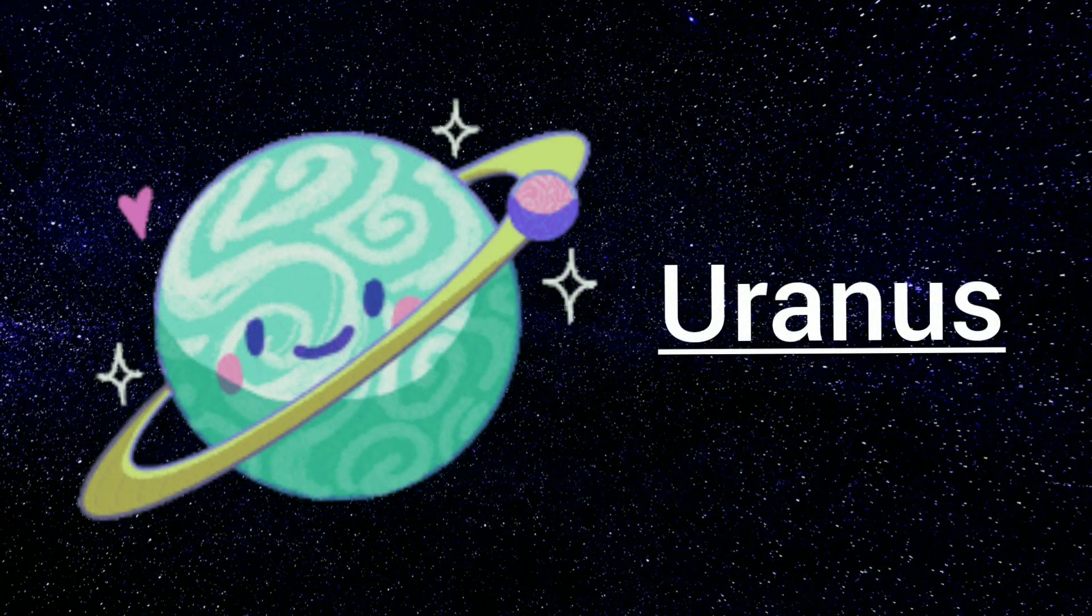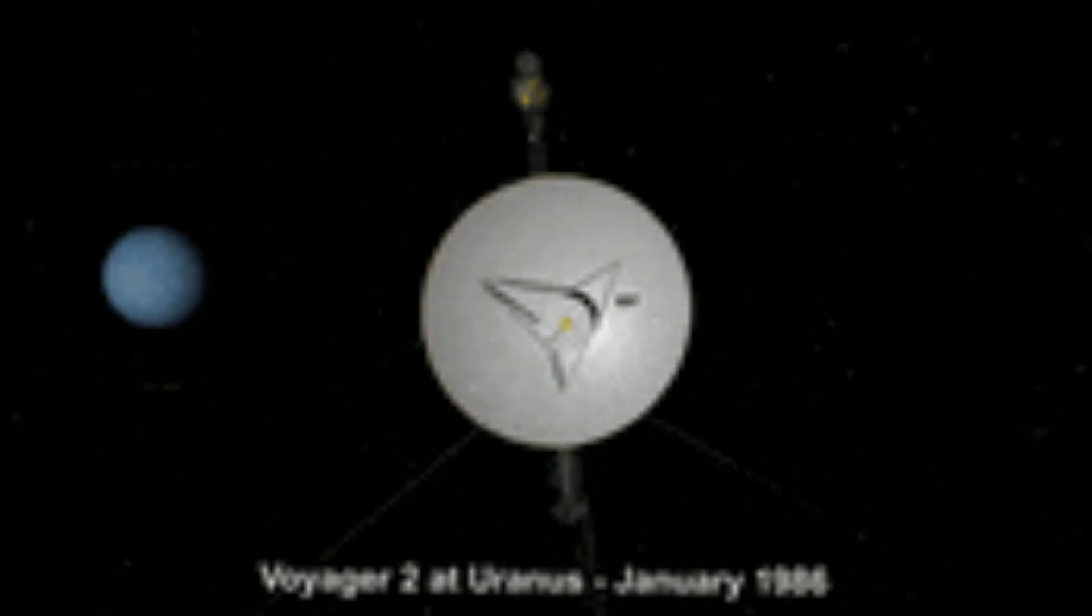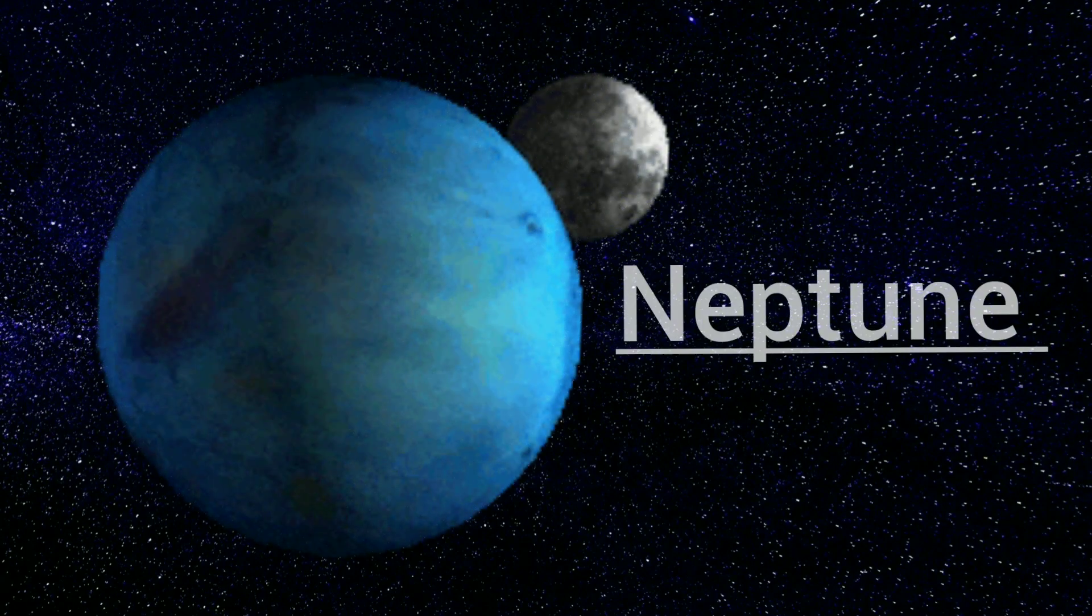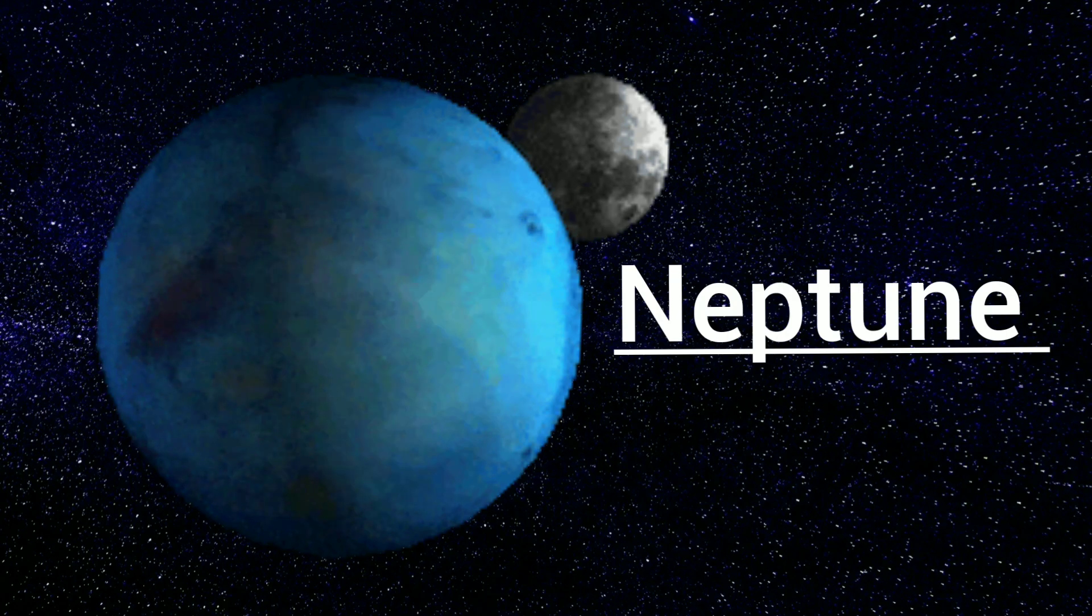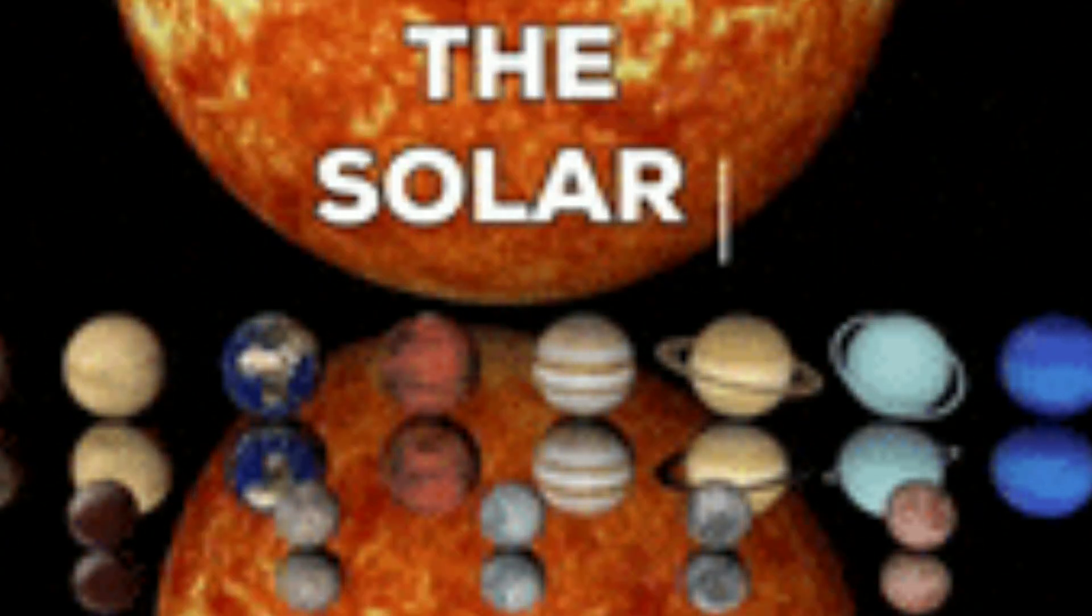The seventh in line, Uranus, who spins around laying down. The last but not least it's Neptune. But there could be other planets around. Yes, there could be other planets around.